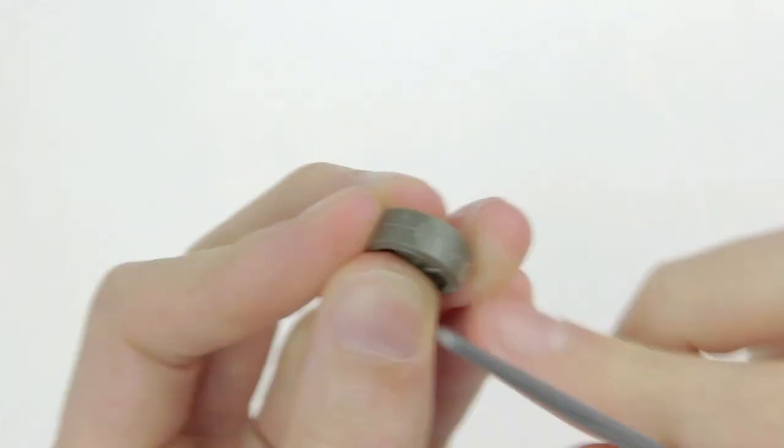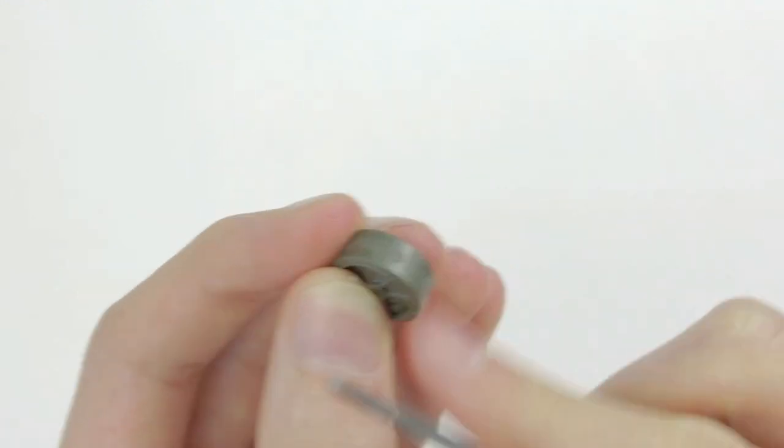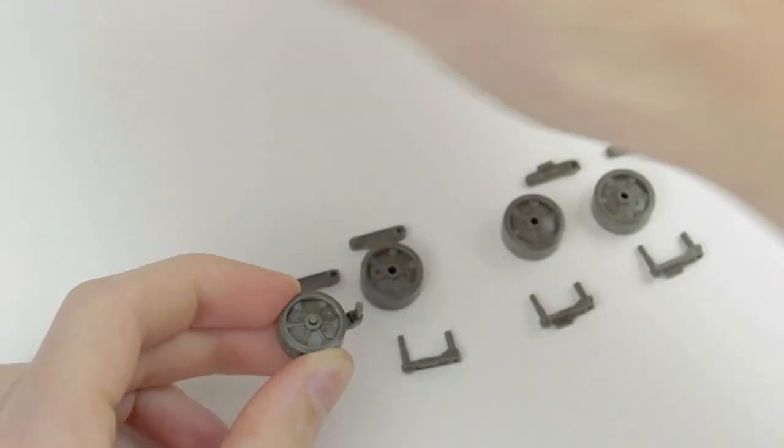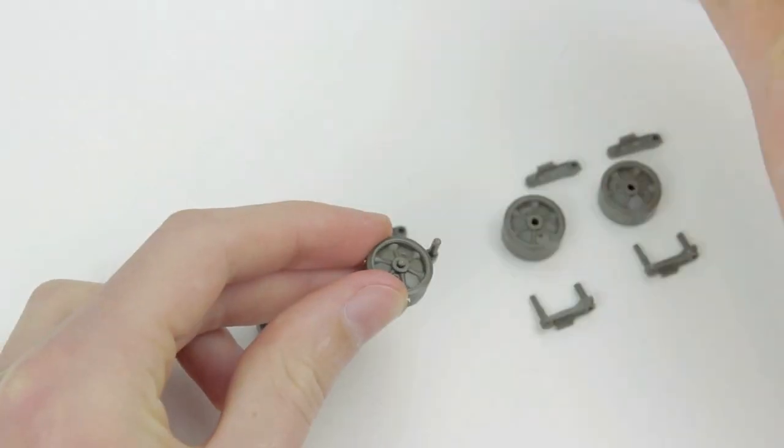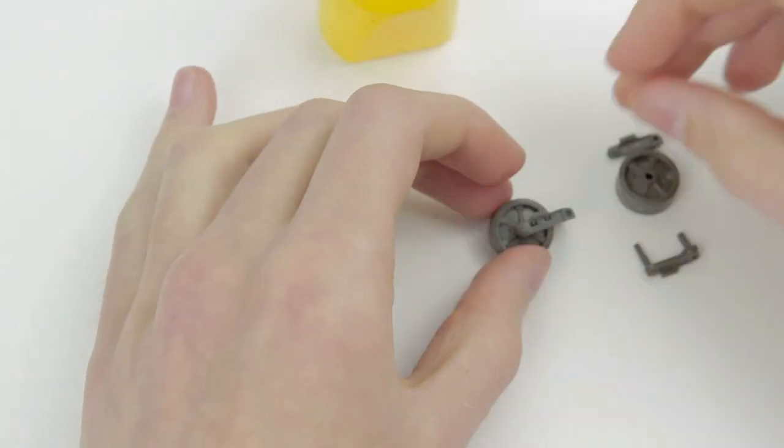The road wheels were well molded except for a small seam around the tire which I sanded down. There were 12 road wheels to build in total.